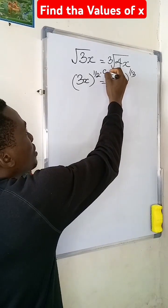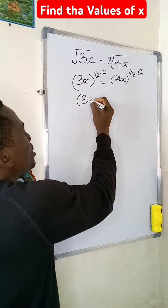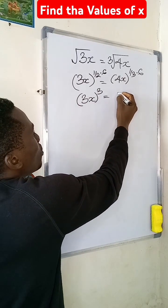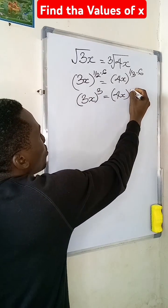Now if I multiply here by 6 and I multiply here by 6, I'm going to have that expression give me 3x to the power of 3 equal to 4x to the power of 2.